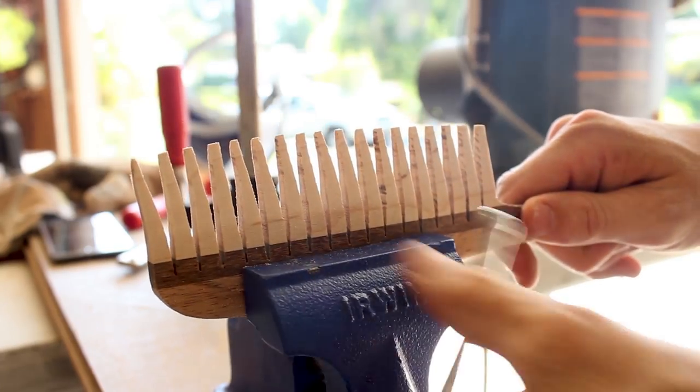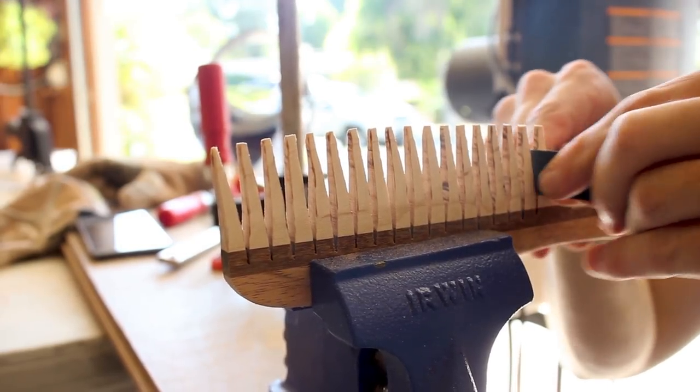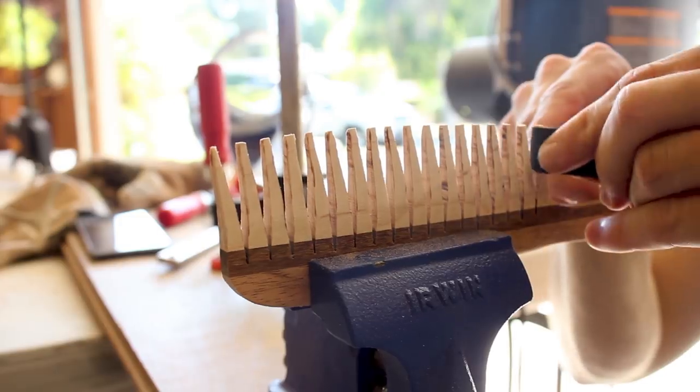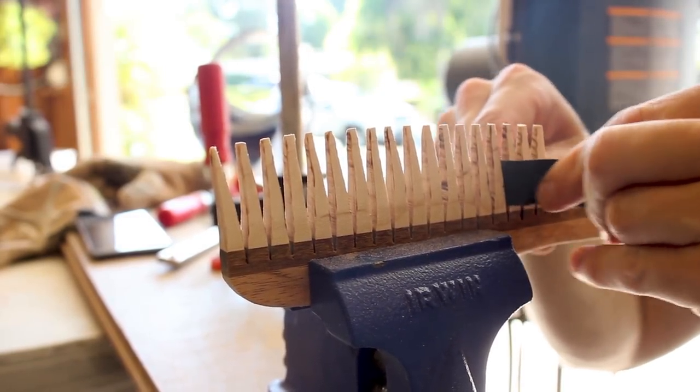Next I clamped it up and began lightly sanding each bristle with 80 grit paper which was a bit tedious but also was really relaxing in the process and worked really well to round over each prong. Again just don't go too hard or you might snap a bristle.